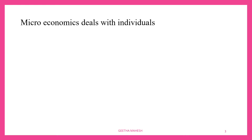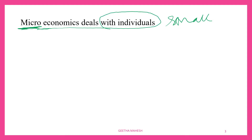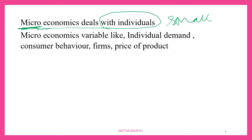Dear students, let us understand what is microeconomics. Micro and macro are derived from a Greek word. Micro means small, so it deals with a small part of the economy — that means it deals with individuals. Microeconomic variables like individual demand, consumer behavior, forms, price of the product, etc., will be discussed under microeconomics.